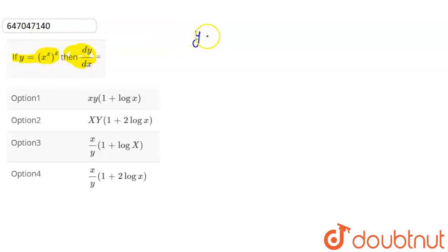Before we solve this equation, x power x and power x will multiply. This means the power will be x square. This property will be studied. If you have a power b and whole power c, then b and c will multiply. So here the two x will multiply, then the power will be x square.